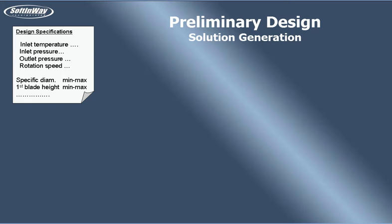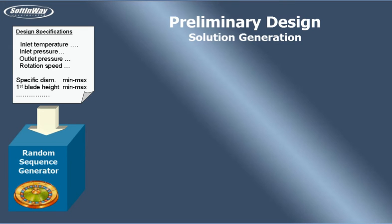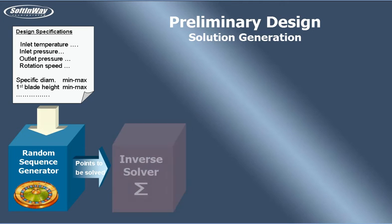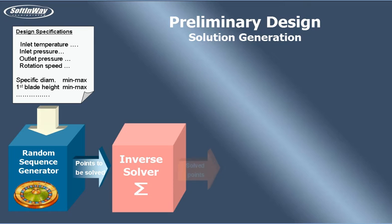Boundary conditions and ranges of design parameters are the input to a random sequence generator. The random sequence generator produces special quasi-random sequences named Sobol sequences, featured with the best coverage of space with multiple parameters. Each generated item, or point, is a set of design parameter values spread randomly inside specified ranges. Design parameter values are the input to the solution generator engine — the inverse solver — which tries to find an appropriate flow path design that satisfies input parameters with maximum efficiency.